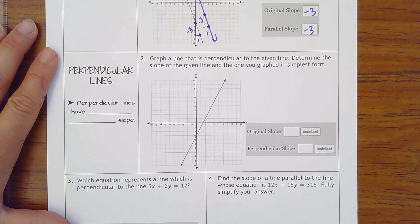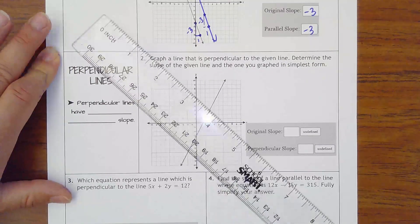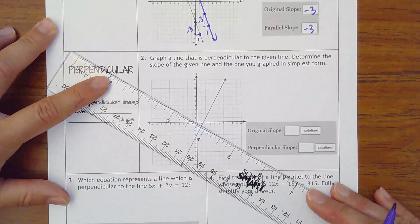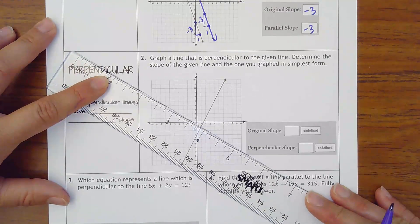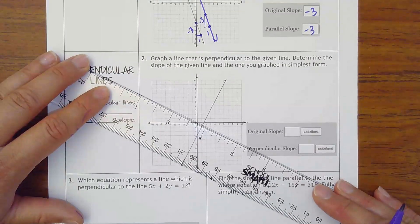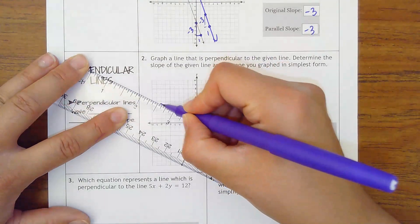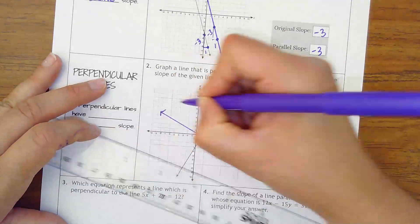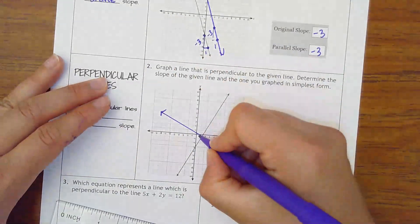Then let's talk about perpendicular lines. It's not as clear. So it's graph a line that is perpendicular to the given line. Perpendicular means it's got to make a right angle. So I'm going to say something. I'm just going to cut an eyeball here. Something like this. It's got to make like a big plus sign. Right?